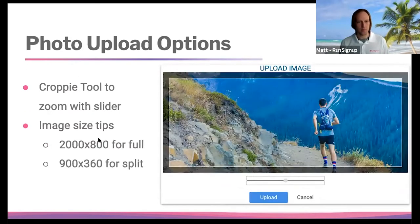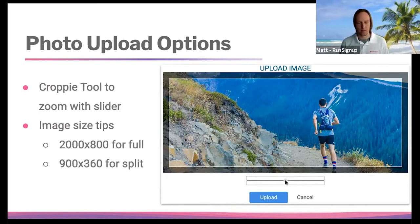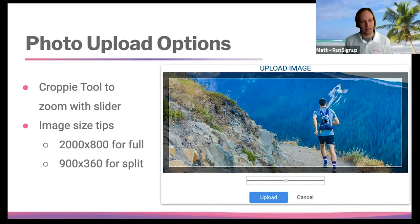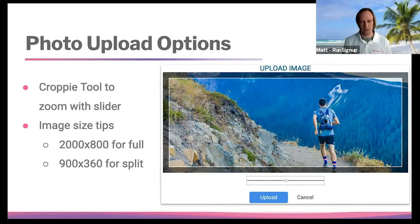When uploading images, there is a croppy tool. We recommend starting with an image size around 2000 by 800 pixels for a full section. You can see the zoom bar underneath the photo to scale where you want to go. Here the runner is slightly off to the right, and as the screen size scales he's still going to be on the image and won't get cut off because he's central to the image. For split content sections, a good starting point is 900 by 360 pixels, and again you have the croppy tool to zoom in where you want.